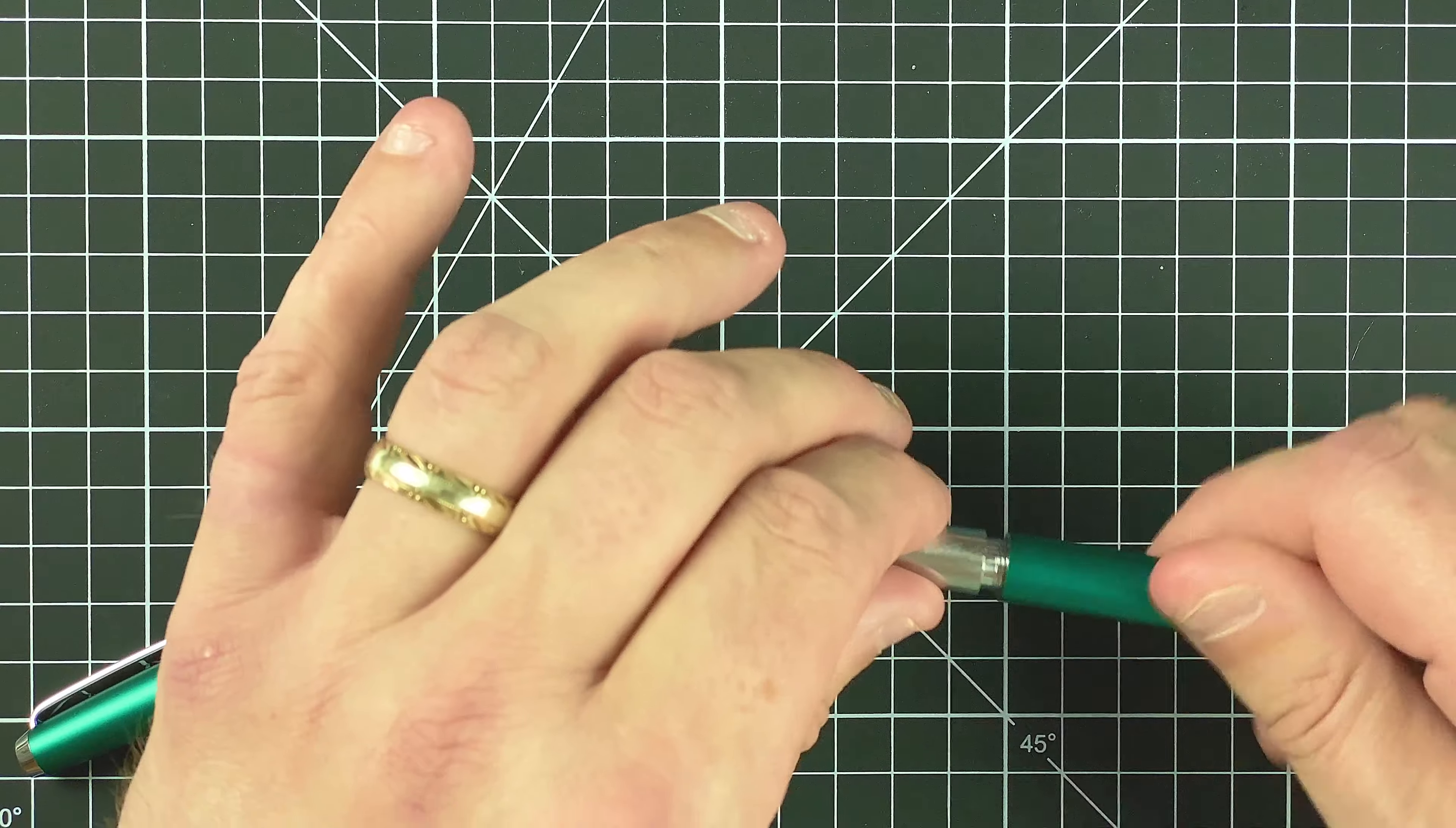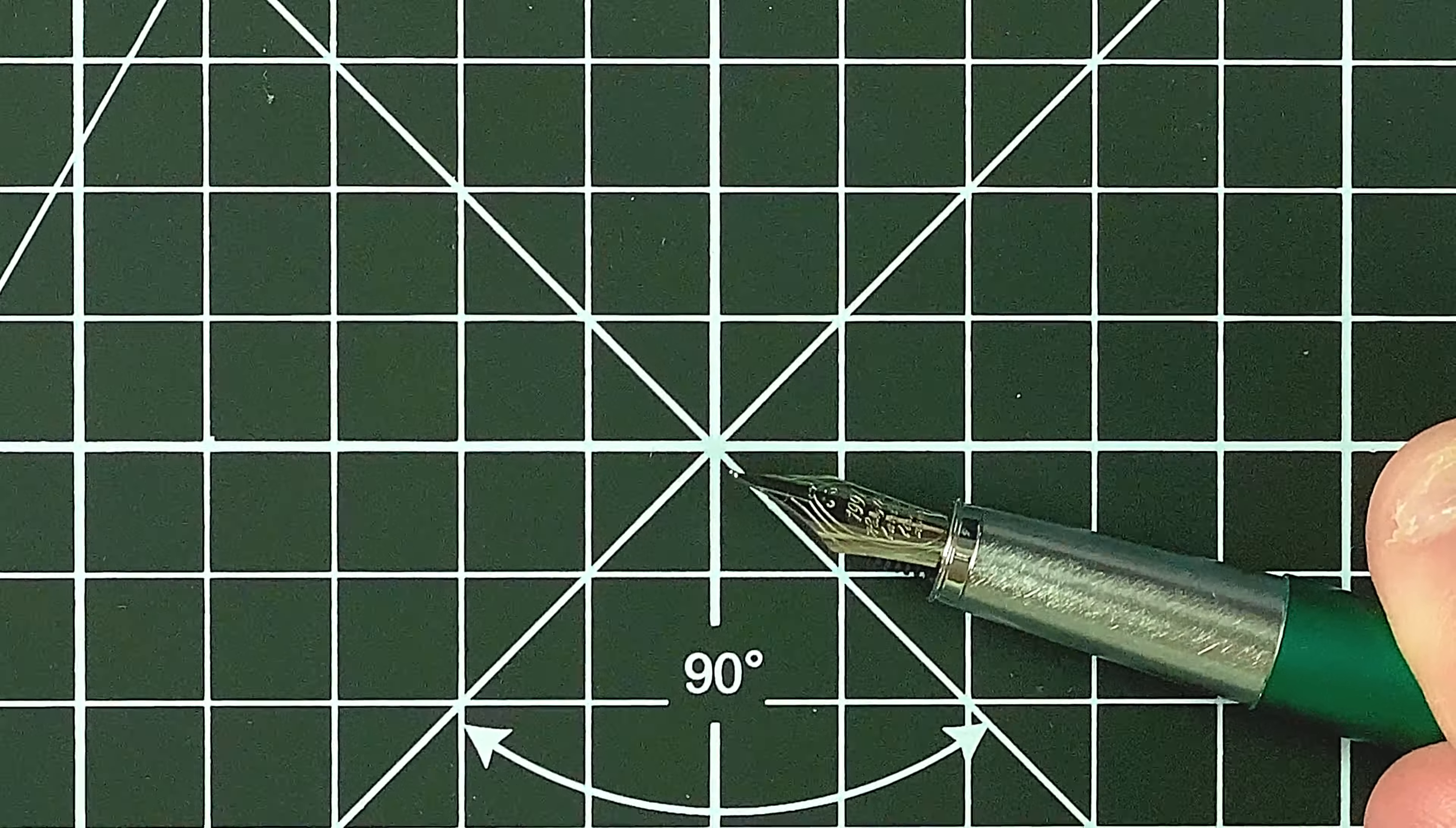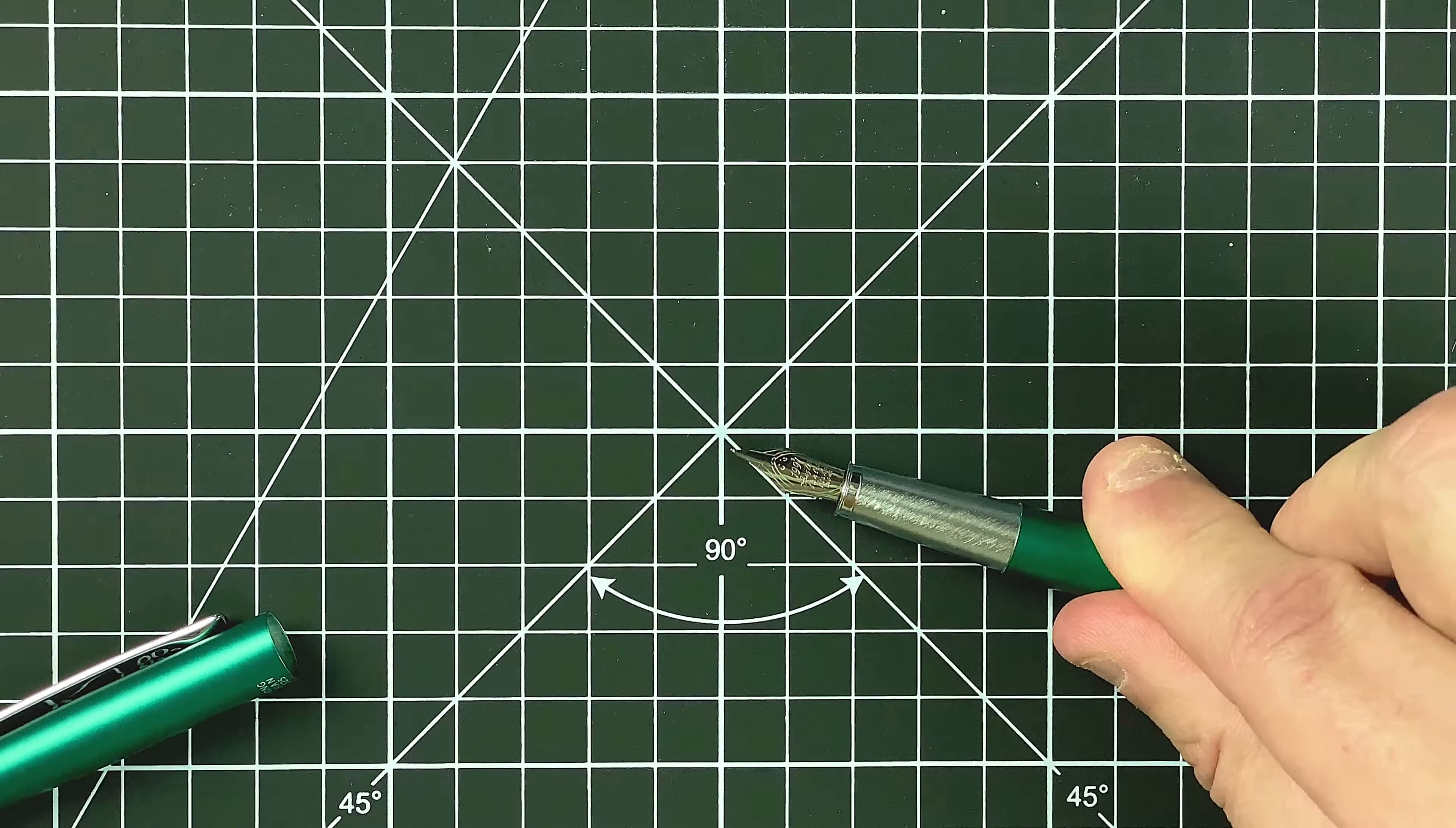The big difference with this one, what attracted me to it, is actually the nib. So I don't know if you can see on the camera, the nib is what they call a small bent nib. I think some people refer to it as a Fude nib. So it's just got that slightly different nib than I would usually go for.